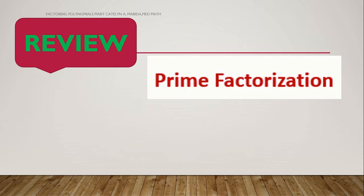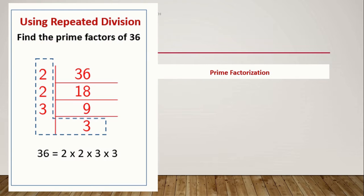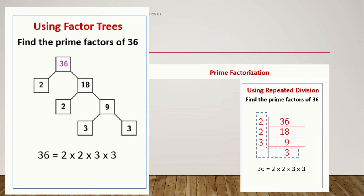It is the process of factoring a number or numbers by getting its prime factors. There are many ways to do this, but we are going to talk about two ways to do this for this video. Number one, by using repeated division. And number two, by using factor trees.